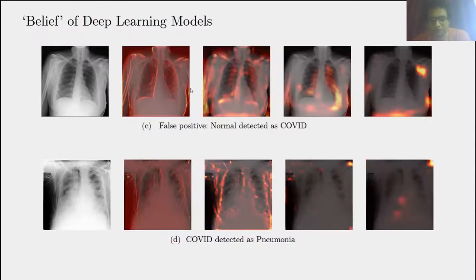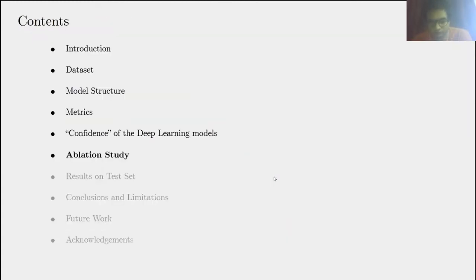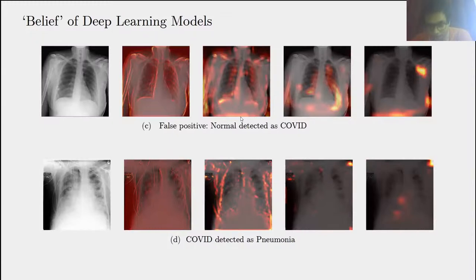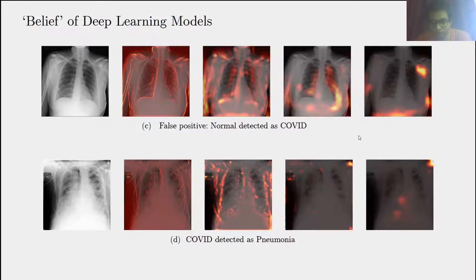We also showed the same for when a normal image is detected as COVID, or a COVID image is detected as pneumonia. Initially, the model learns the shape of the lungs and overall structures. As we move into deeper layers, it starts to highlight specific areas within the image. Sometimes this is incorrect — for example, when a normal image is detected as COVID, it also highlights areas within the bone, which is in the image but not actually relevant.